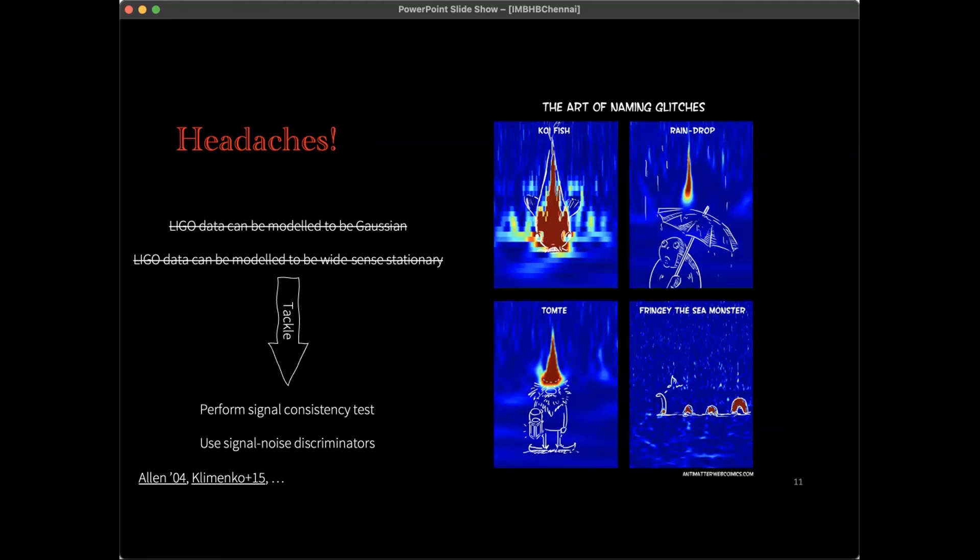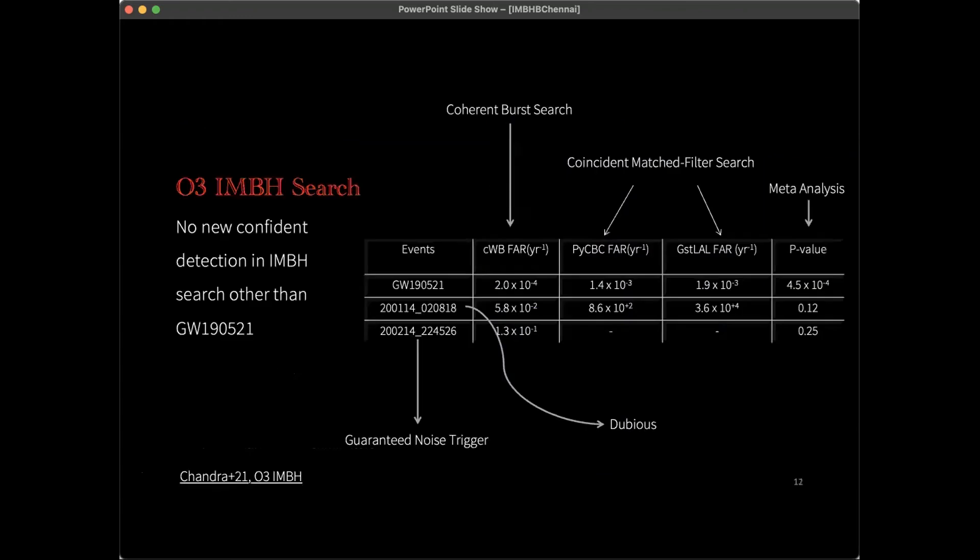For the final few minutes, I will quickly rush through the O3 IMBH results. Let me start with some bad news. Unfortunately, other than GW190521, we failed to obtain any new confident gravitational wave trigger. We actually reported two more triggers, but they are of highly questionable origin. One of them is actually guaranteed to be a noise trigger, whereas the other one is so dubious that we had to dedicate an entire appendix for it.